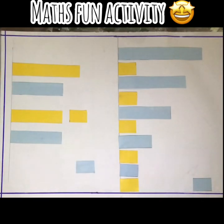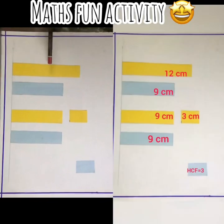of scissors, a ruler, and glue. Now we have to take two numbers - let's say the number 12 and number 9 - and we have taken out the strips of these two numbers of any breadth.